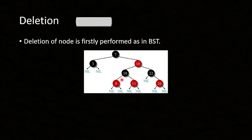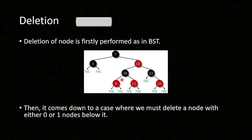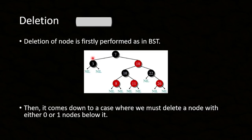It comes down to a case where we must delete a node with either 0 or 1 nodes below it. What this means is that we do not actually swap the node — we copy the value of the node. For instance, if I want to delete 7, I just copy the value of 8 here, and I will actually delete that node. So if I want to replace with 3, I actually need to delete this part — copy this value and just delete this part.